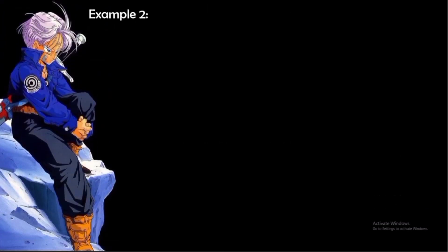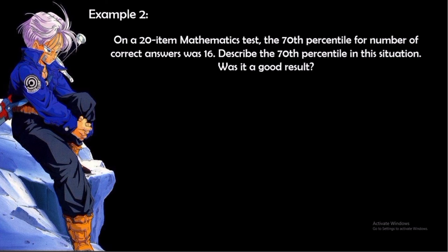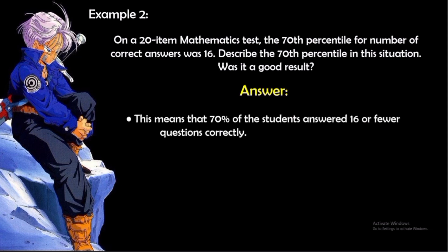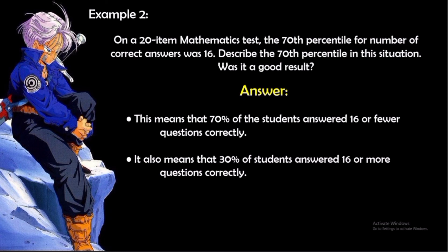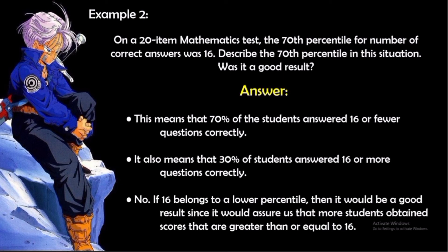Example 2: On a 20-item mathematics test, the 70th percentile for the number of correct answers was 16. This means 70% of the students answered 16 or fewer questions correctly, and 30% answered 16 or more correctly. If 16 belongs to a lower percentile, it would be a good result since it would assure us that more students obtain scores greater than or equal to 16.